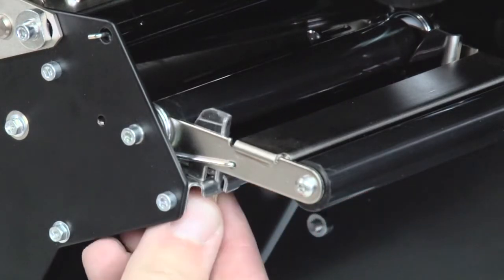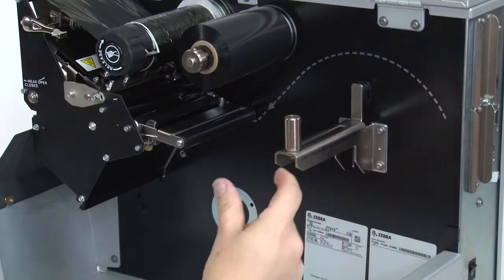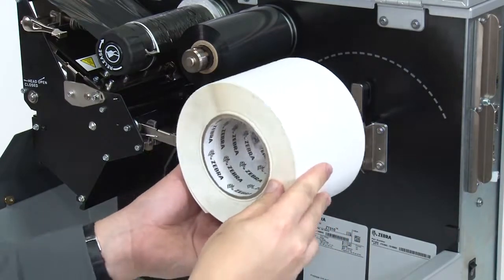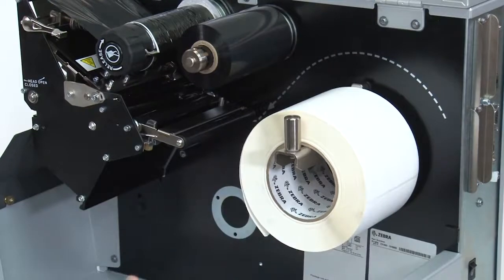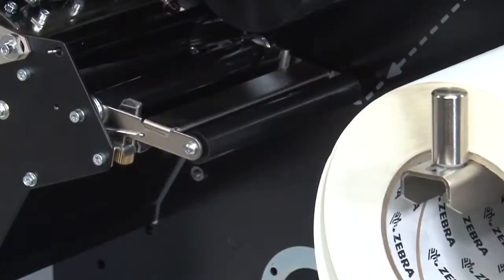Slide the media guide all the way out. Slide out the media supply guide and place the roll of media on the media supply hanger, then push it back. Slide in the media supply guide until it touches the media.